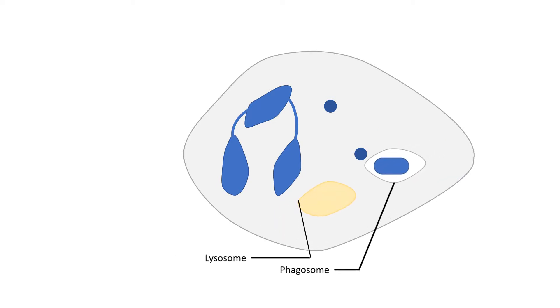The phagosome fuses with a cellular organelle, the lysosome, forming a phagolysosome. The enzyme lysozyme present in the lysosome breaks down the bacterial cell wall, thereby killing it.